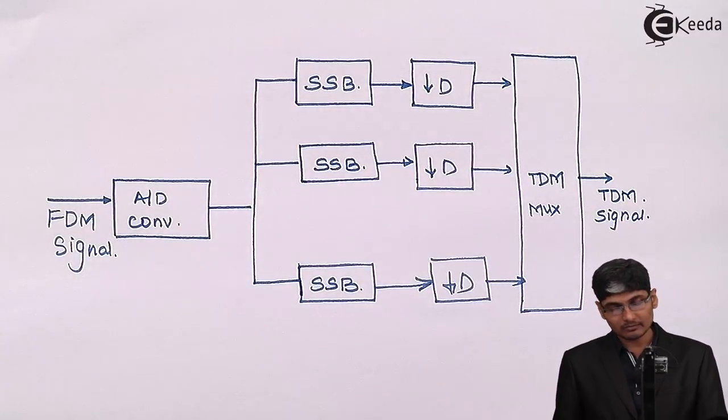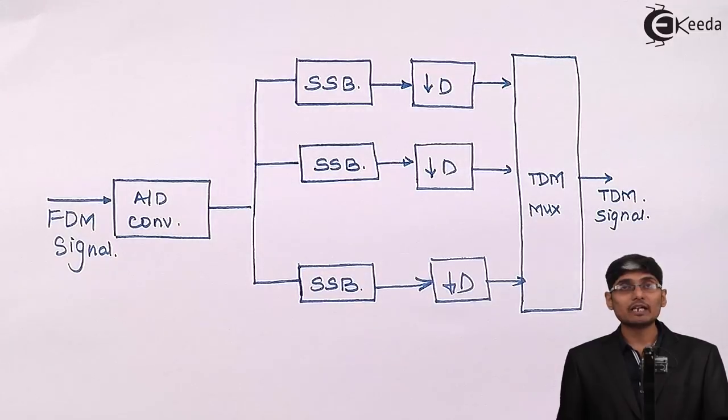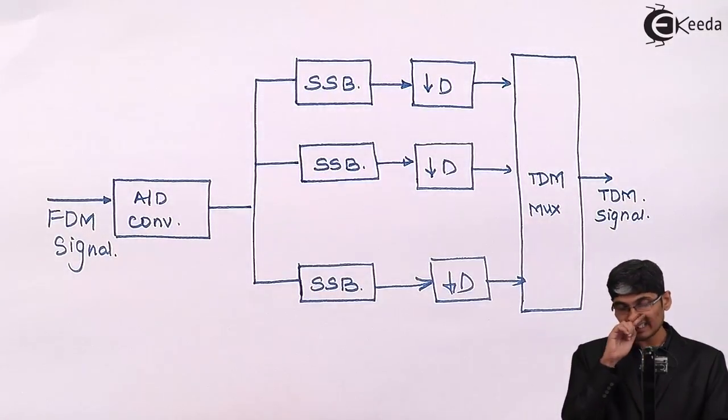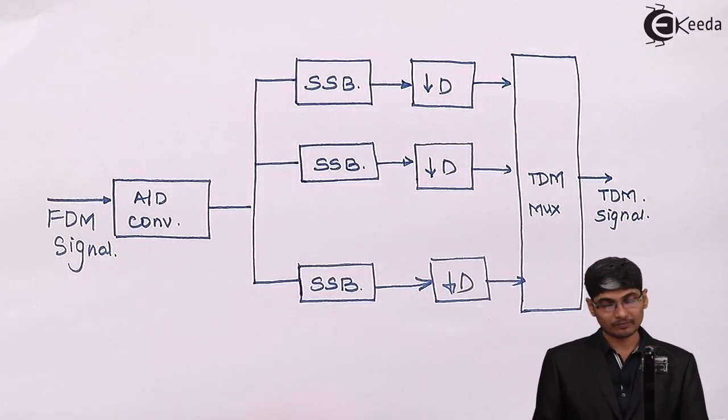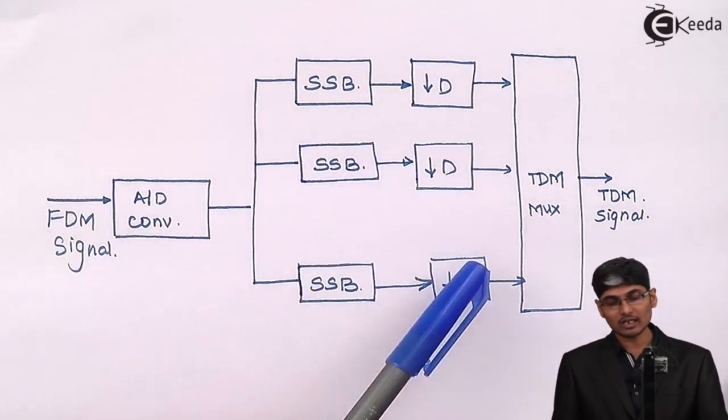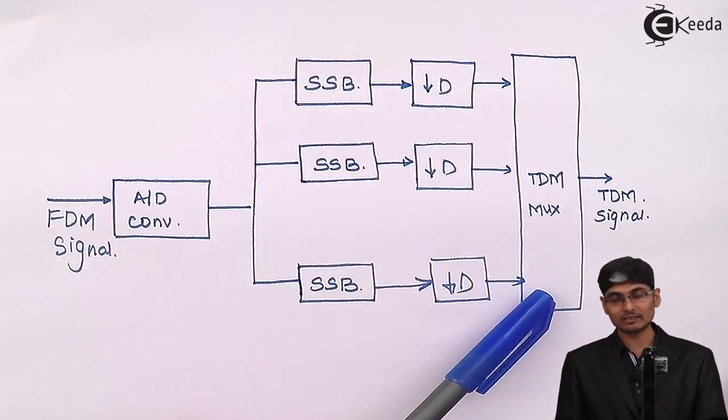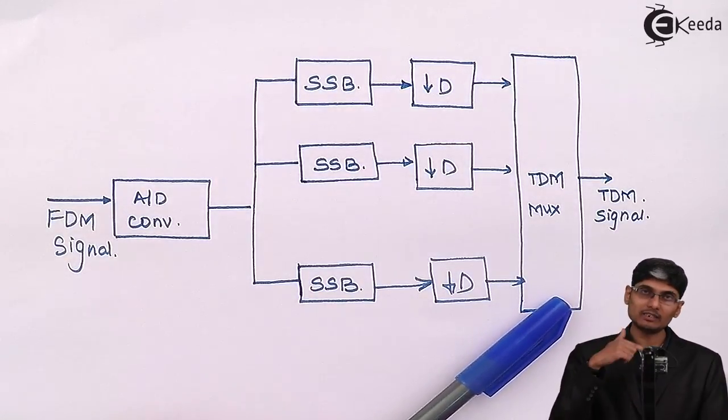I will demodulate them and pass through a decimator. Here D is selected to be equal to 12. The decimated outputs are given to a TDM multiplexer. TDM multiplexer is nothing but just a switch, a commutator switch.